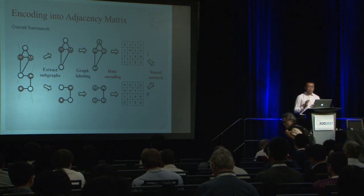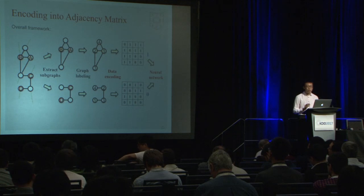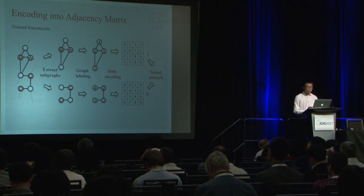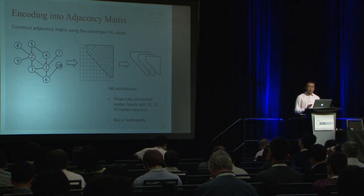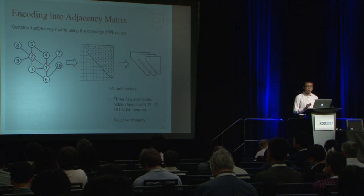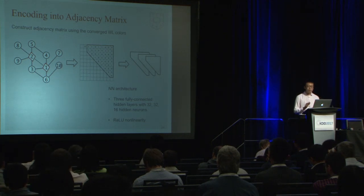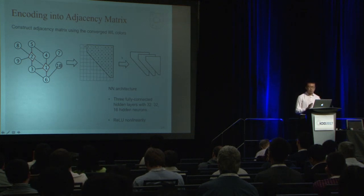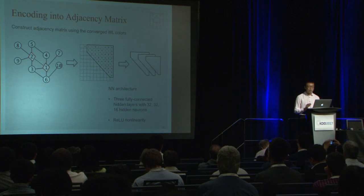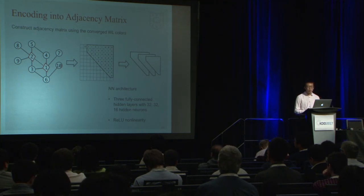After determining node labels using Palette WL, we encode each enclosing subgraph into an adjacency matrix and feed it into a neural network. Given the converged WL colors, the vertex order is determined and the adjacency matrix is constructed. Because of the color order-preserving property of Palette WL, the two target nodes always have the smallest final colors, guaranteeing that the target link is always encoded at position A₁₂ of the adjacency matrix — the yellow star. This is critical: without this guarantee, the target link could appear arbitrarily in the matrix and neural networks could not identify which link to predict. The upper triangular adjacency matrix is then fed into a three-layer fully-connected neural network.